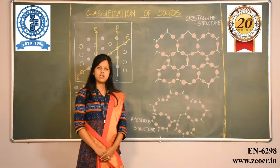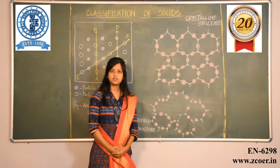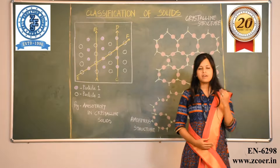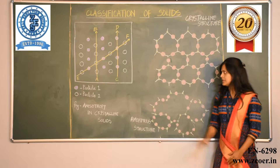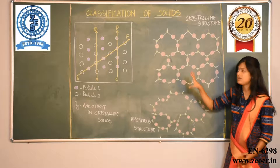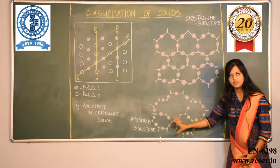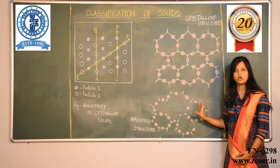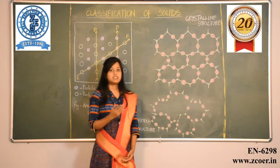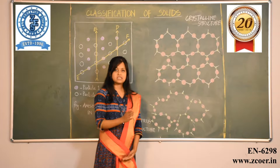Let us look at the further classification of solids. The second type is amorphous solids. Substances which appear like solids but do not have a perfect crystalline structure are called amorphous solids. In a crystalline structure, a pattern repeats again and again over a long range. In amorphous solids, there is no definite pattern, and even if it repeats, it repeats only over a short range. That is why amorphous solids do not have a definite melting temperature — instead, they melt over a range of temperatures.